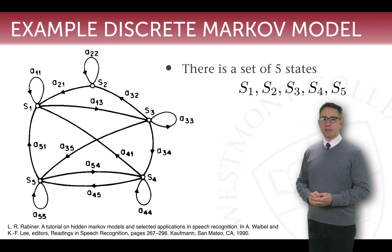So if we consider an example of a discrete Markov model - a Markov model is discrete if it has distinct states that the model can be in at a given moment. We can look at this example here and recognize that there are five different states that are present: S1, S2, S3, S4, and S5.